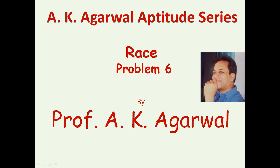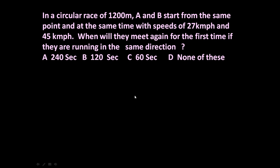Hello friends and welcome to AK Agrawal aptitude series. In this session we are going to learn a technique for solving a problem on race. The given problem is: in a circular race of 1200 meters, A and B start from the same point and at the same time with speeds of 27 kilometer per hour and 45 kilometer per hour. When will they meet again for the first time if they are running in the same direction? Track length is 1200 meters.